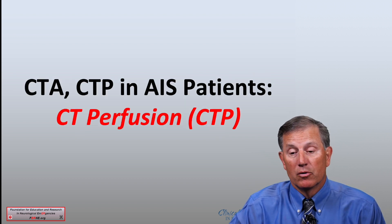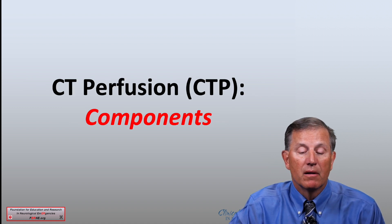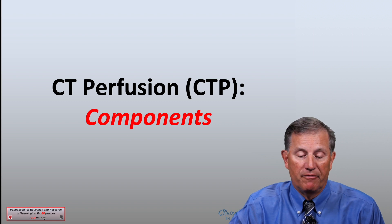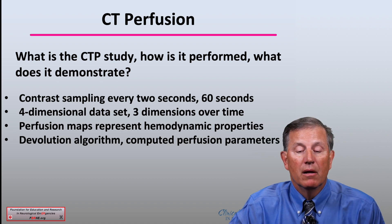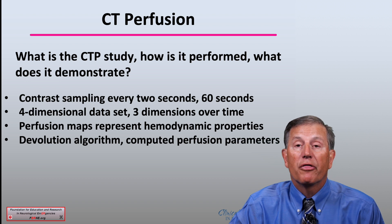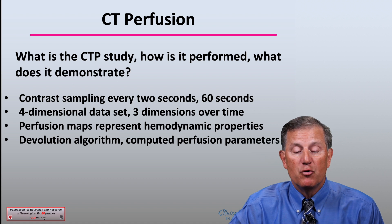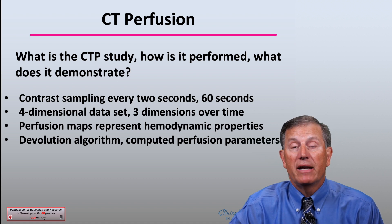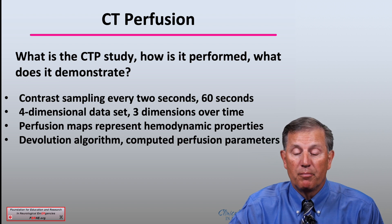When considering multimodal CT testing, we need to consider the use of CT perfusion or CTP. The CT perfusion study does contrast sampling every two seconds for 60 seconds. It provides a four-dimensional data set with three dimensions, three directions, and a time component. It provides perfusion maps which represent hemodynamic properties of the tissue at risk. Using a devolution algorithm, it provides computed perfusion parameters.